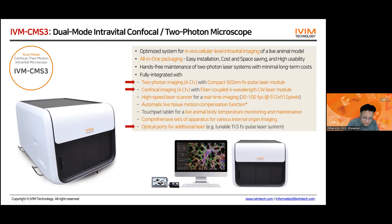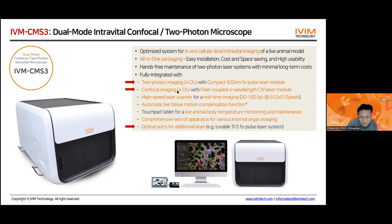This microscope is equipped with a compact 920-nanometer femtosecond pulsed laser for two-photon imaging with four different colors. We can also connect four wavelength CW lasers for confocal imaging, also simultaneously with four colors. There are additional optical ports on the back side of the microscope box for additional laser connections, like a conventional tunable titanium-sapphire femtosecond pulsed laser system for two-photon imaging.